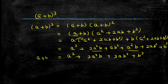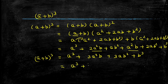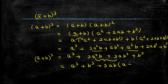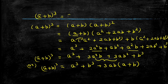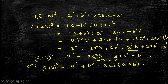So we get the identity: a plus b the whole cube is equal to a cube plus 3a square b plus 3ab square plus b cube. We can also rewrite it by collecting the cube terms — a cube plus b cube — and factoring 3ab from the remaining terms, giving 3ab into a plus b. So a plus b the whole cube equals a cube plus b cube plus 3ab into a plus b.